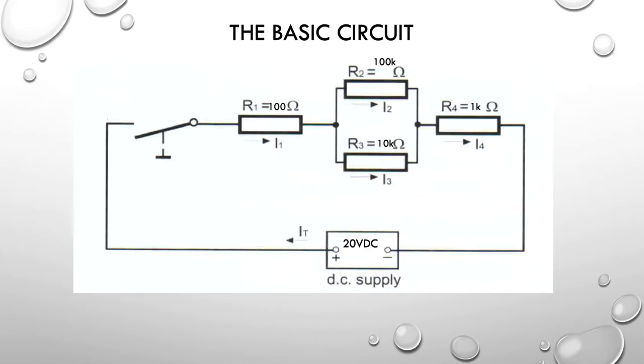So here's our basic circuit. As you can see, we've got 100 ohms for R1. In series with that, we have a little parallel network between 100k and 10k. Then in series with that, we've got another 1k ohms, and we've got a DC power supply running at 20 volts. That's our basic circuit from a circuit diagram perspective.